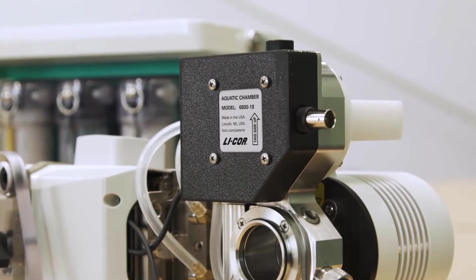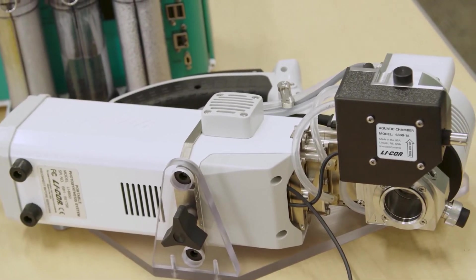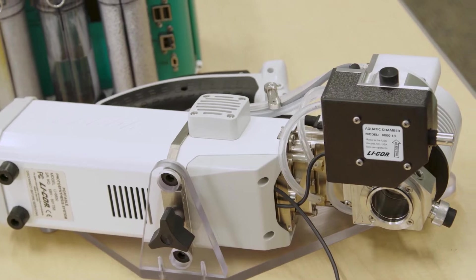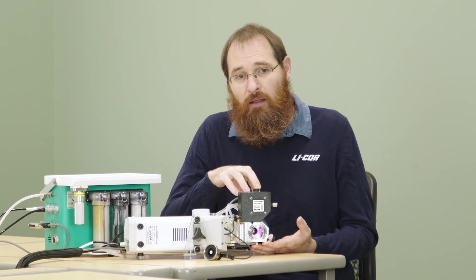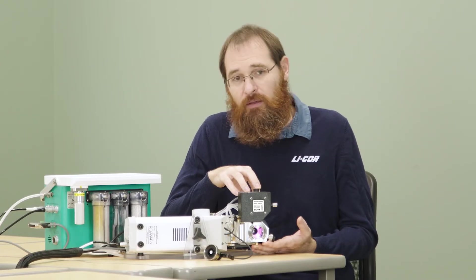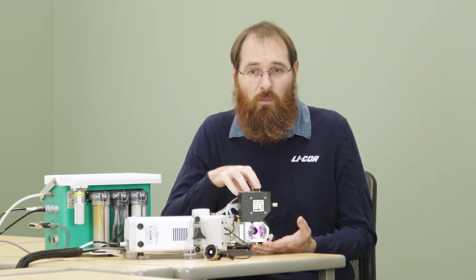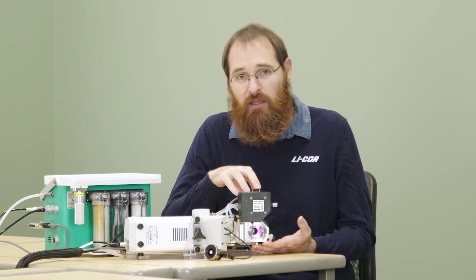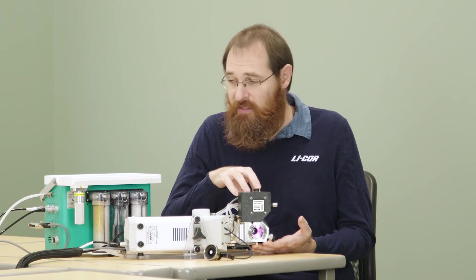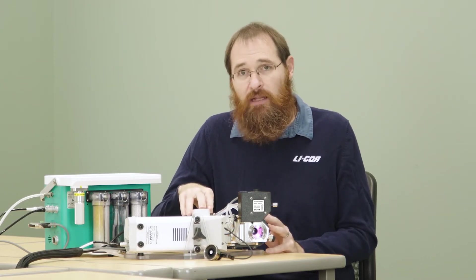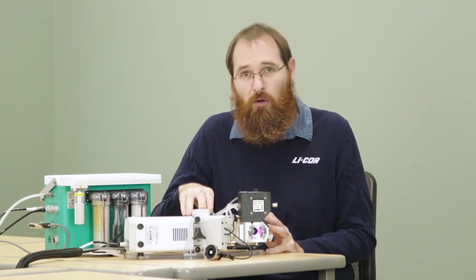The aquatic chamber and the 6800 are a bit different than the instruments that are normally used to measure algal physiology, in that here we're measuring carbon dioxide, as opposed to oxygen, and typical oxygen measurements are made using what we would call a closed transient approach, where you're looking at the change in concentration over some period of time. In the 6800 we use an open flow-through steady state approach to make our carbon flux measurements, or to compute carbon assimilation.